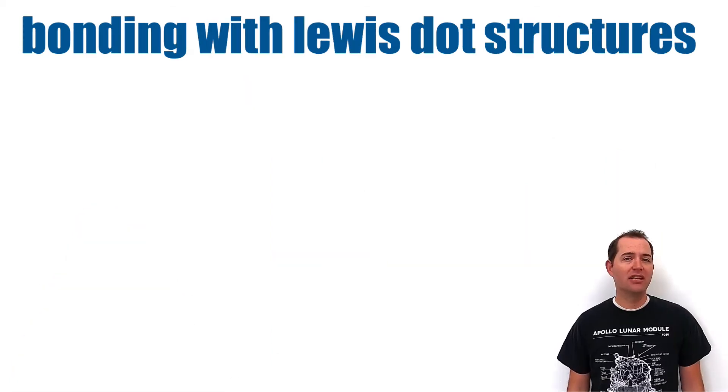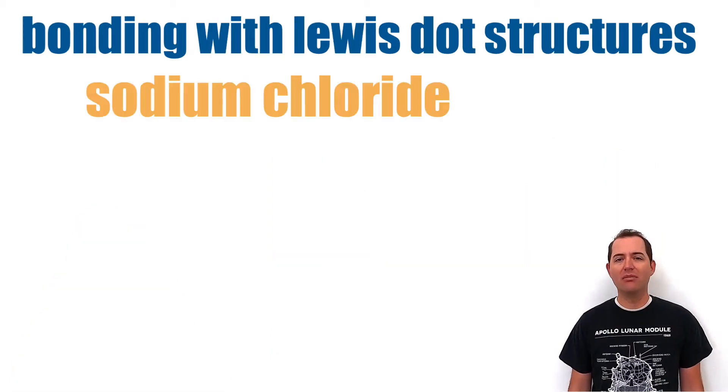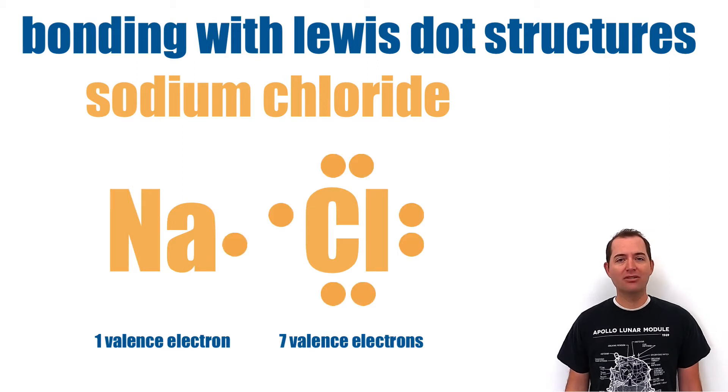Lewis dot structures can also be drawn to represent molecules. To do this, we start by drawing each element's separate Lewis dot diagram.